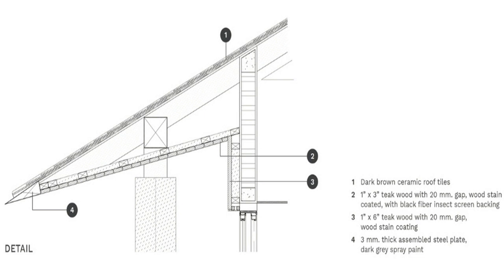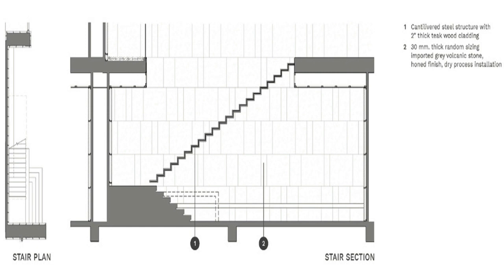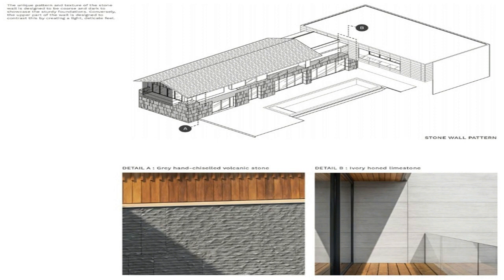On the second floor, the private master area is designed using different materials and color scheme to set it apart and create some dynamics. The spacious walk-in closet is sectioned into his and hers, merging with the bedroom and offering views of the swimming pool and garden. A further four bedrooms for the family are designed in different yet coordinated styles.